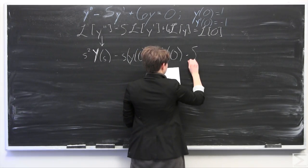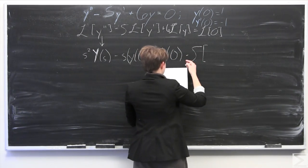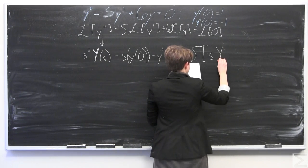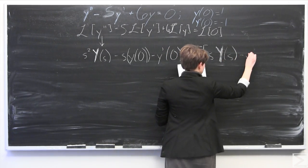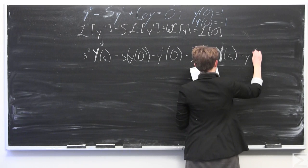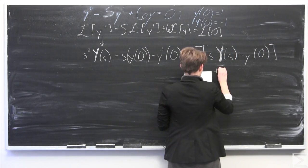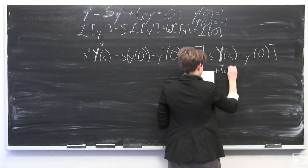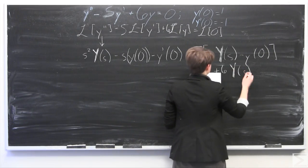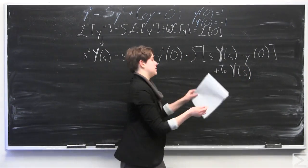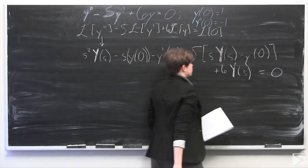Then minus 5 times the quantity s times big Y(s) minus little y(0), and then at the very end we add on 6 times big Y(s). The Laplace transform of 0 is just 0, so we put equals 0 on the right-hand side.